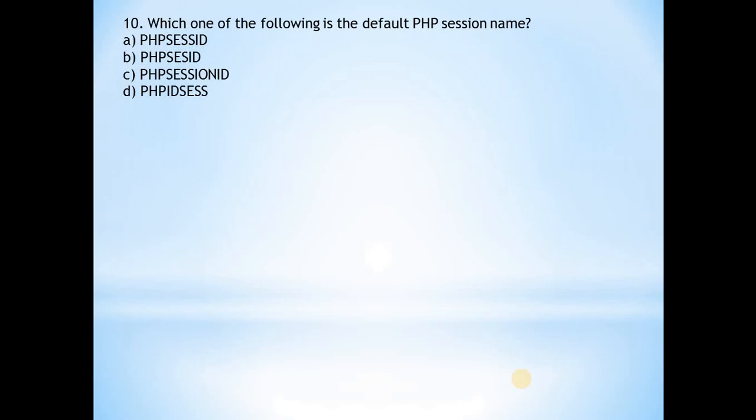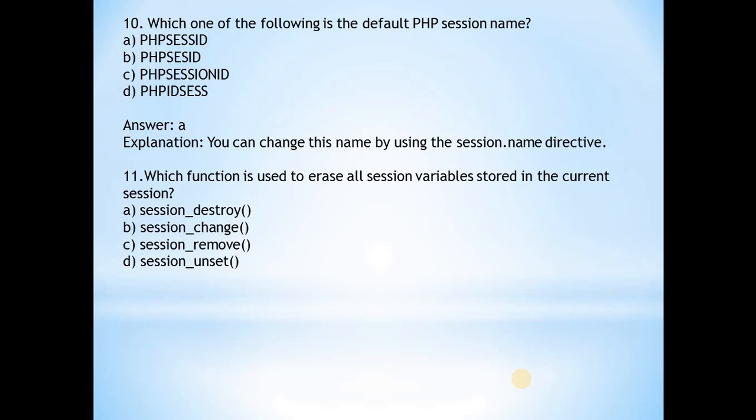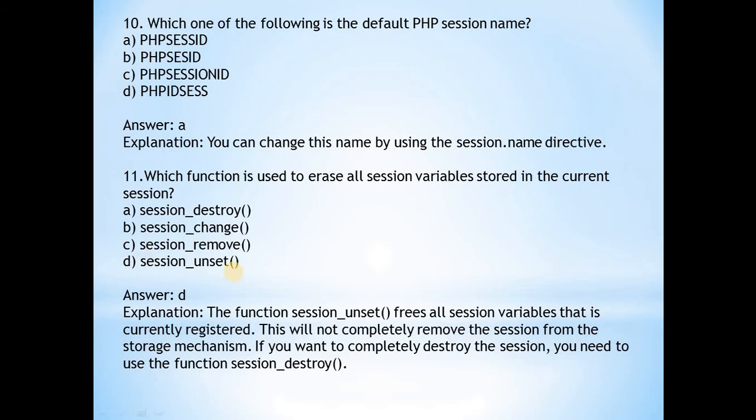Next: Which one of the following is the default PHP session name? Answer is a, PHPSESSID. You can change this name by using the session.name directive. Next: Which function is used to erase all session variables stored in the current session? Answer is d, session_unset(). This function is used before session_destroy() to free all the session variables currently registered. This will not completely remove the session from the storage mechanism. If you want to completely destroy the session, session_destroy() destroys it completely.